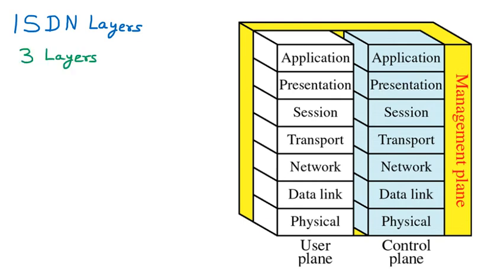The first layer is the user plane. The user plane is basically for user-to-user communication. If two users want to communicate, the connection between them is taken care of by the user plane. There are multiple channels in ISDN — the B channel, called the bearer channel, and the H channel, which is the hybrid channel. The functionality of the B channel and H channel are also taken care of by the user plane.